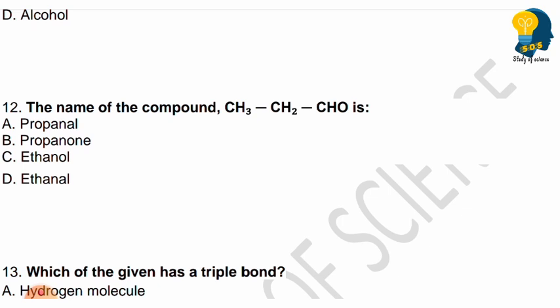Next question: Name the compound CH3-CH2-CHO. Identify the functional group and count the total number of carbon atoms, then answer. Options are propanone, ethanol, or propanal. Identify the functional group and count the carbons — it is easy to answer.